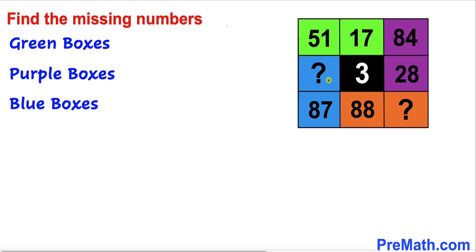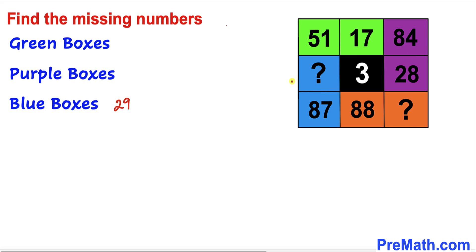We are going to find this missing number and apply the same pattern we learned in the previous boxes. Three times something should give us 87, so therefore this missing number has got to be 29.